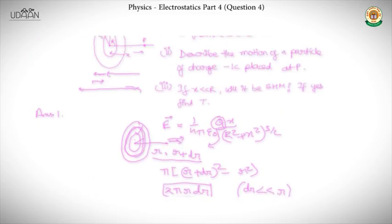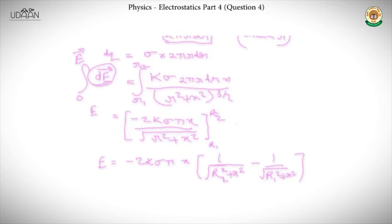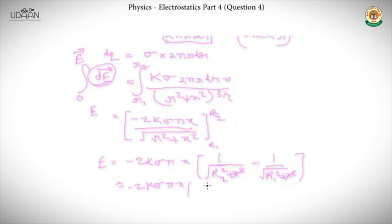Now let's check if it is SHM under the condition x much much less than r. If x << r, we can neglect x² from the expression. So this equation becomes E equals minus 2k·sigma·pi·x times (1/r2 minus 1/r1).